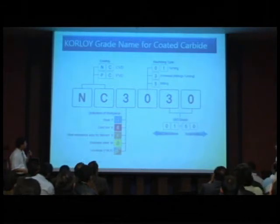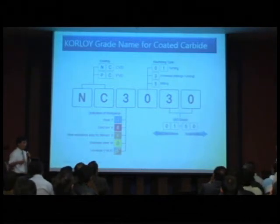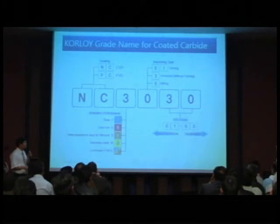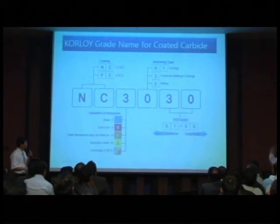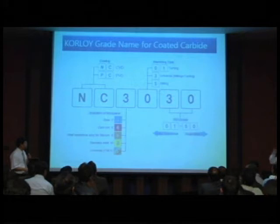The next digit indicates the operation. We use 0 or 1 for turning operations. The universal is 3, which covers both turning and milling, and 5 would be for milling.